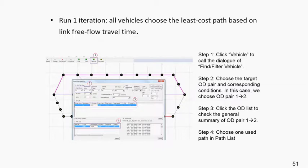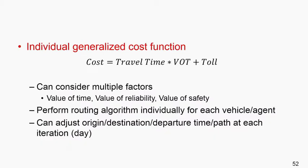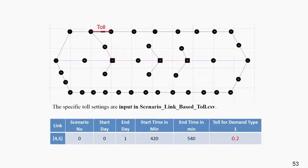If all vehicles run through the shortest path based on link free flow travel time, they select path one at 11 minutes. As I introduced, the concept of generalized cost is: travel time times V-over-T, plus toll. In the next example, if you place a toll on link 4 to 5, in the data format you have scenario 0, starting day 0, ending day 1, starting time 440 minutes, ending time 520 minutes, with a toll of 0.2 dollars on this link.